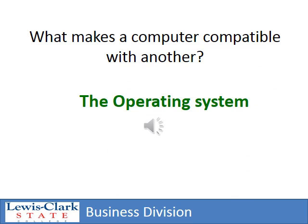That's just a few of the computers introduced during this time period — there are many, many more. Many of you probably didn't realize there were so many different kinds. They were not compatible. If I had an Atari and my friend had a Commodore, we couldn't share information or programs. What makes a computer compatible with another is the operating system, and at this point most of these computers had different operating systems.